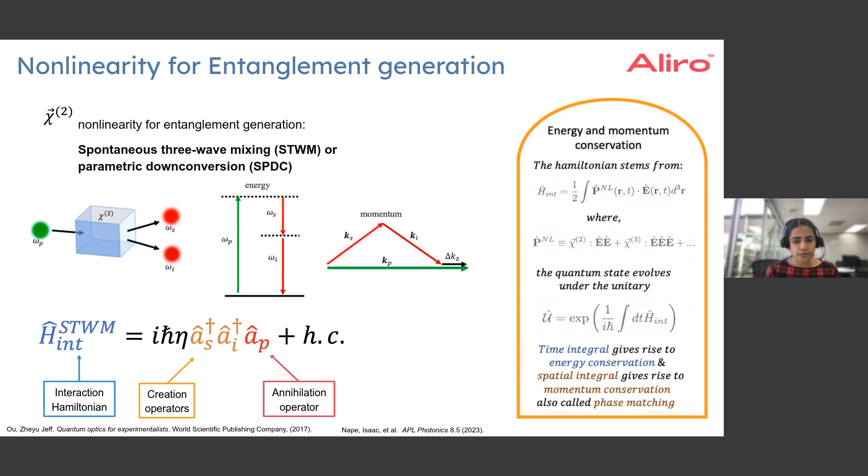Similarly, there is also conservation of momentum. If we want to understand from the quantum mechanical perspective how this comes about, we will write down the energy of the optical fields involved, which is essentially the interaction Hamiltonian shown on the right-hand side of the slide.